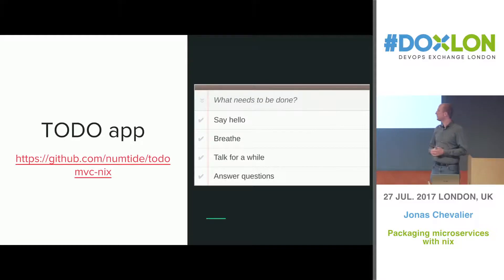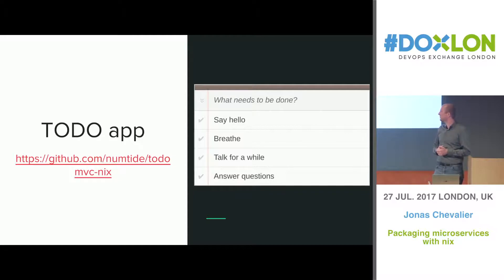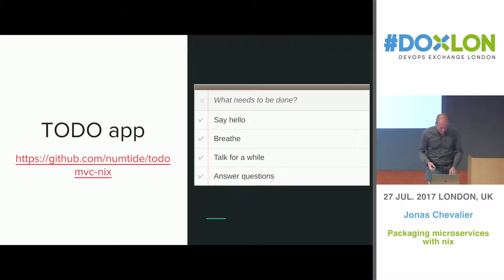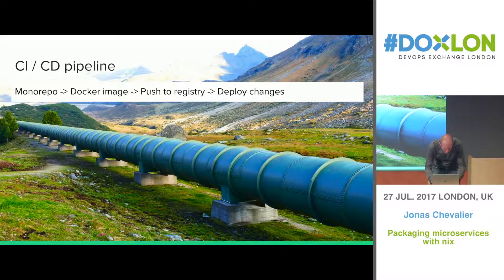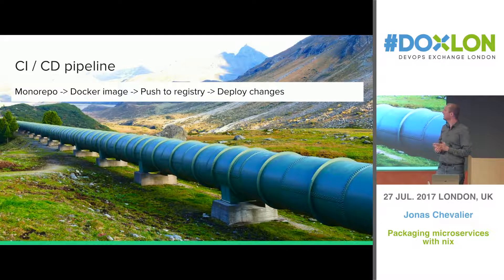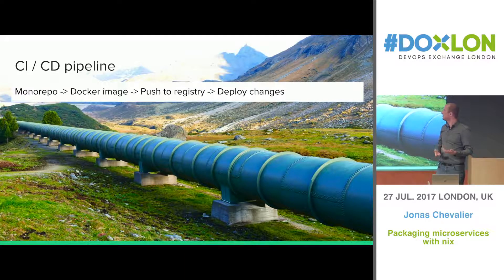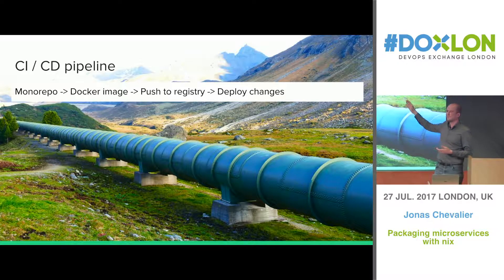So I wanted to show you how to do it, but obviously I can't show you the source code of AlphaSheets. So I decided to build a little app using the TodoMVC project. This is the source code — it takes all the TodoMVC and then just adds some Nix on top of it. Basically you have a monorepo with a couple of services, and then you build a Docker image, push to registry, and deploy the changes. The part I'm really talking about is the first bit where you build the Docker images.